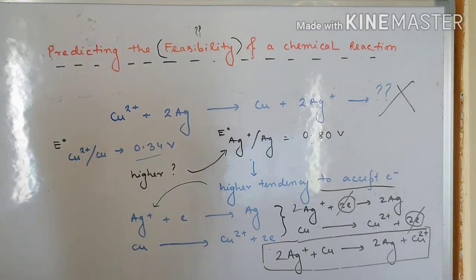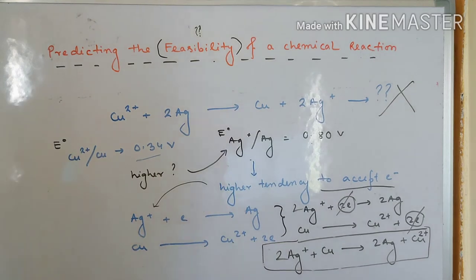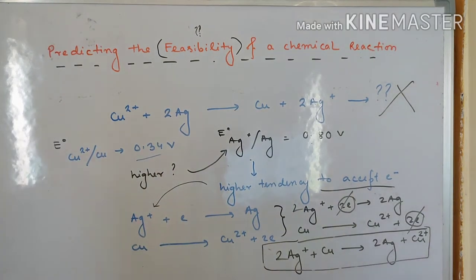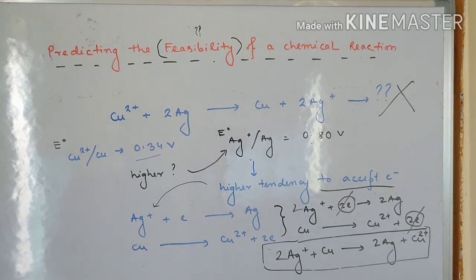So the procedure is: check the two values, get the higher value, note that it has higher tendency to accept electrons and will be reduced, write the other species in the opposite way, get the final equation, and match it with the original question. If both are the same, the reaction is feasible. If not the same, it is not feasible. That is how we find it out. From here on, problems - conceptual and numerical - will be discussed.